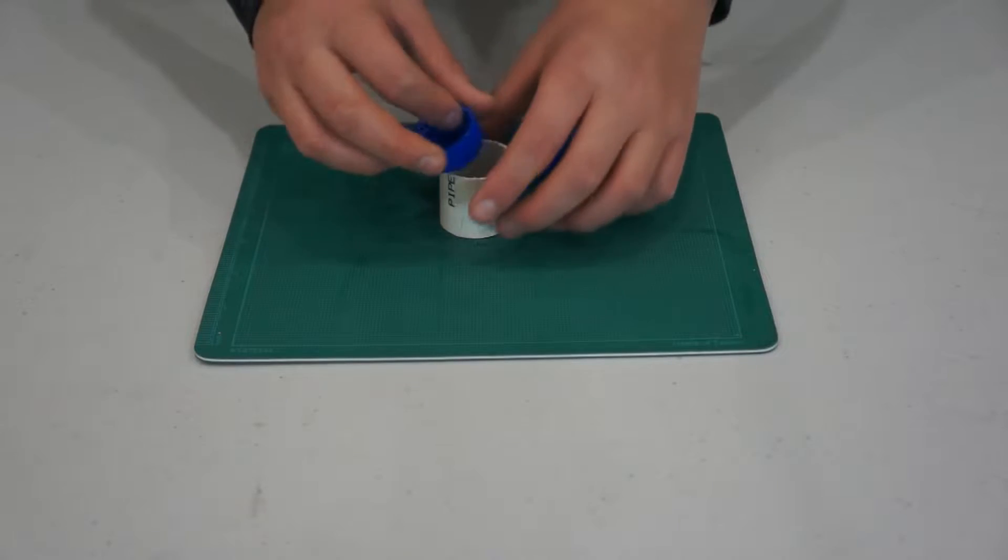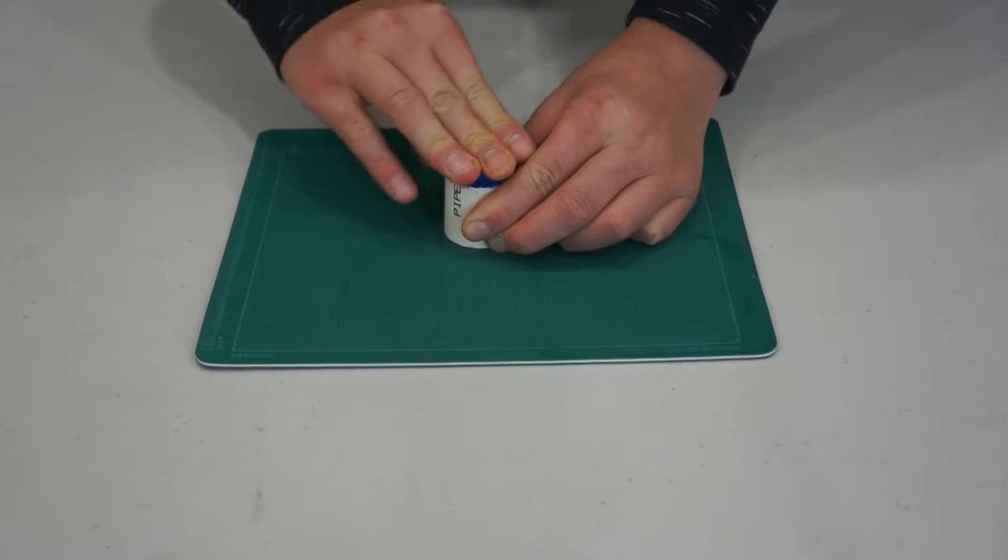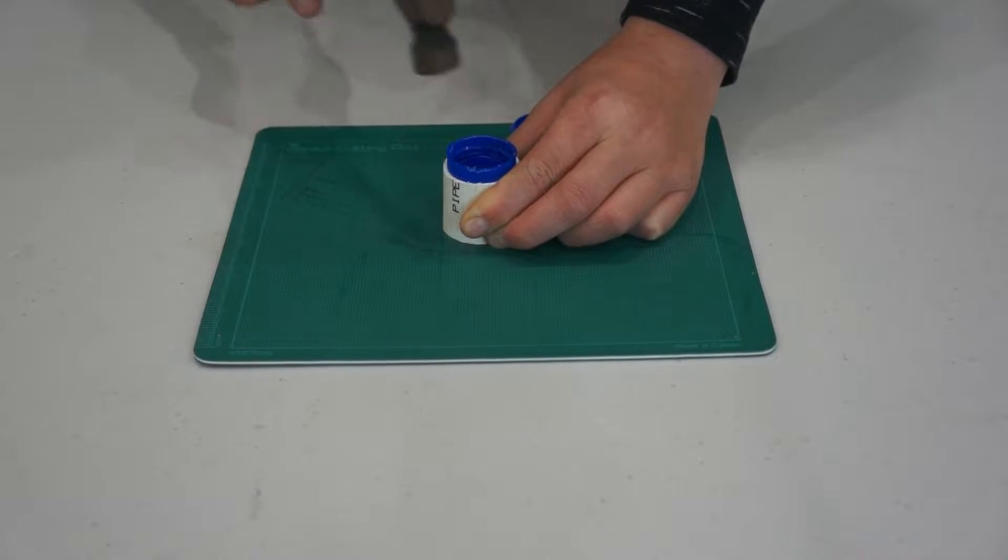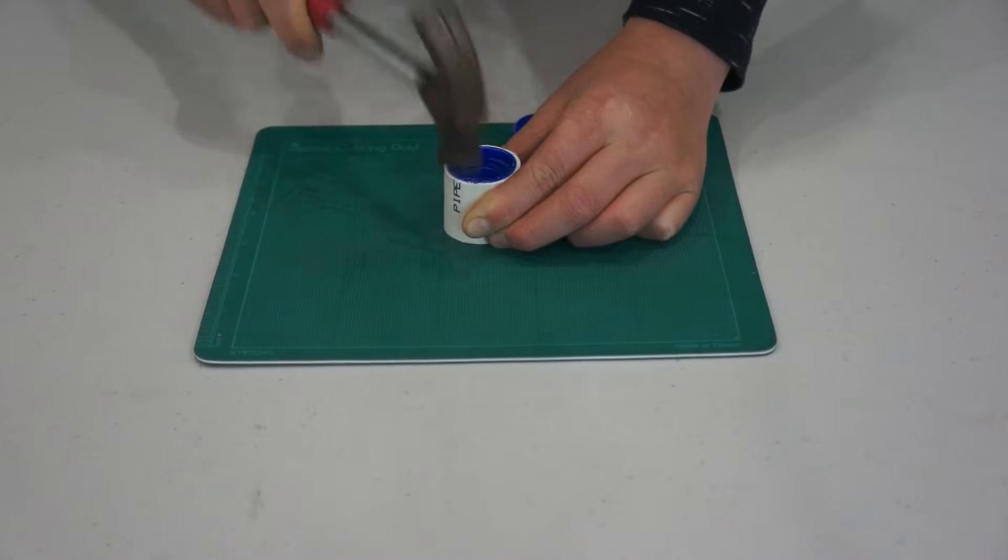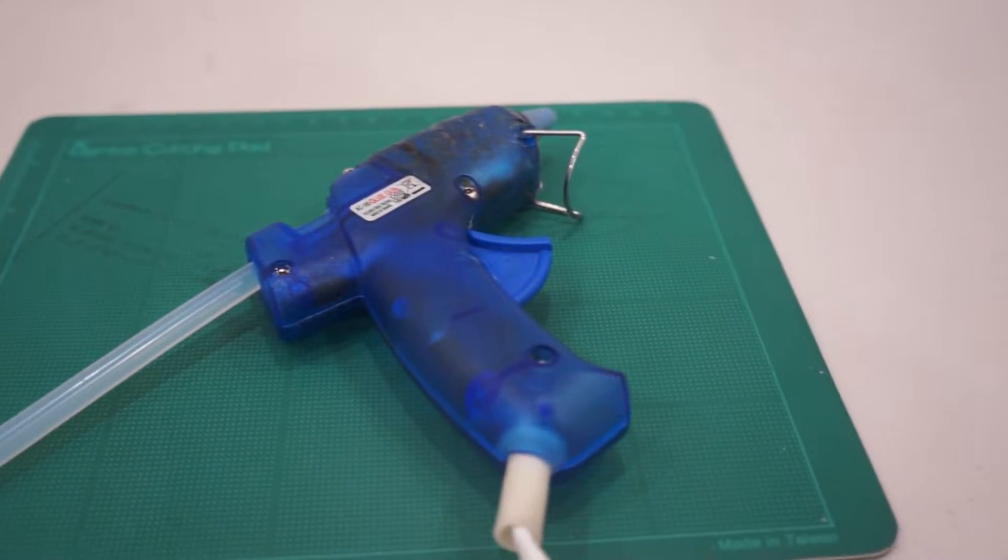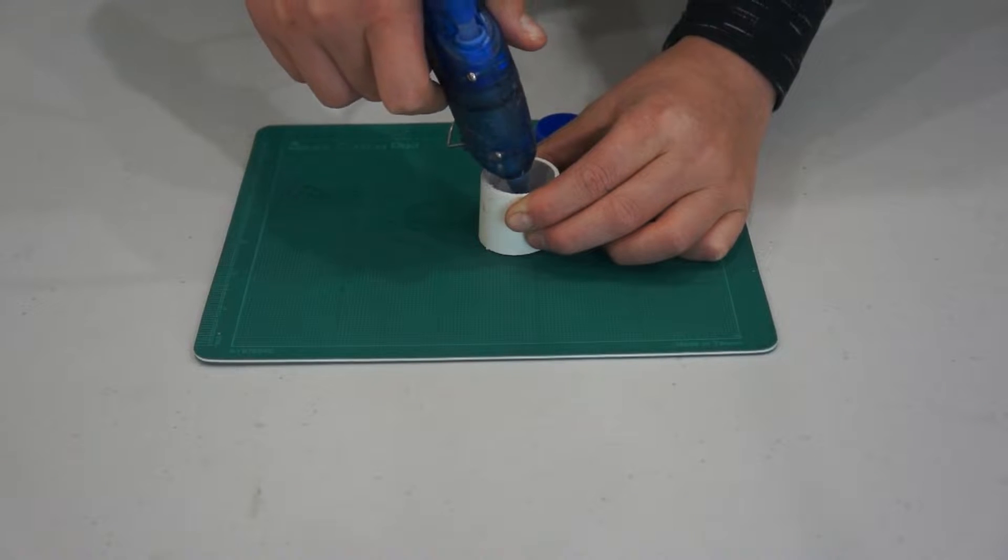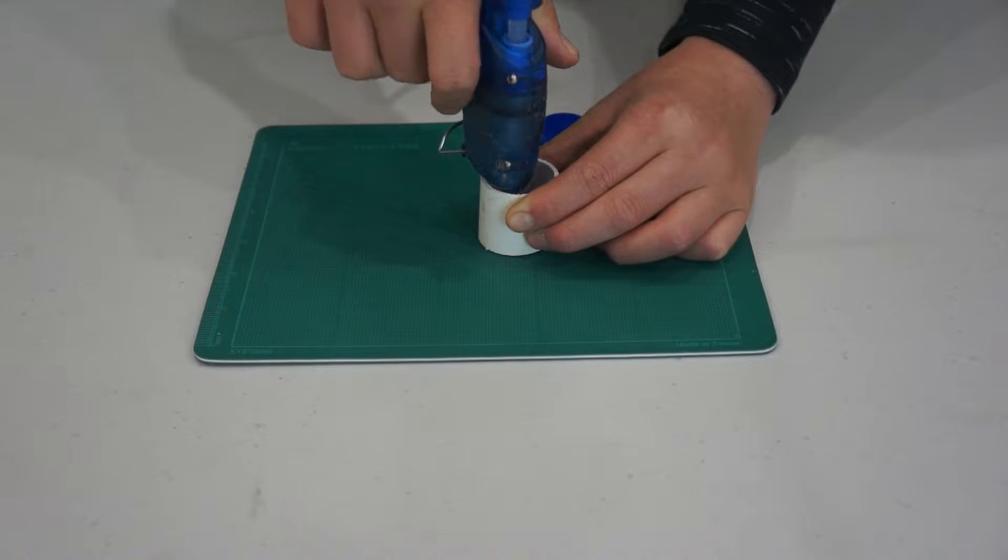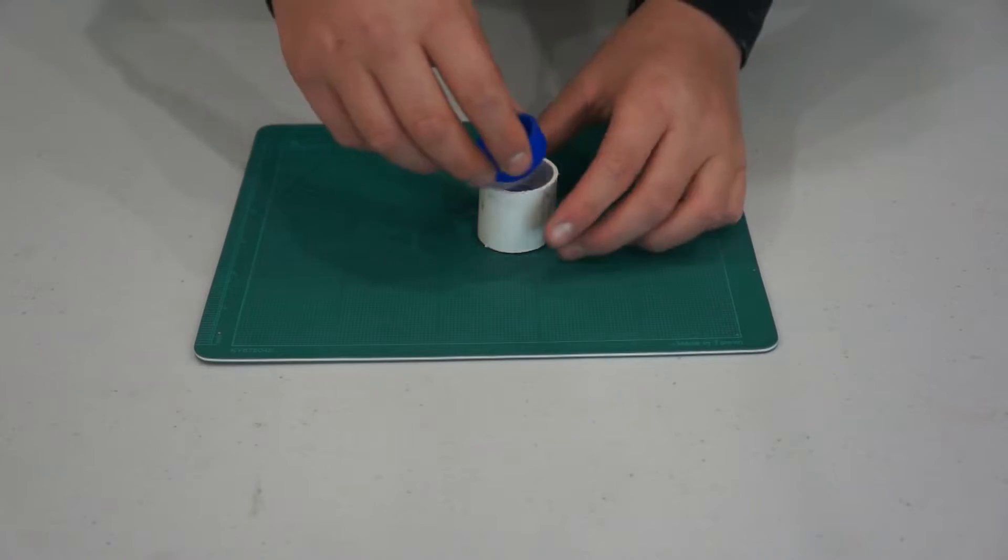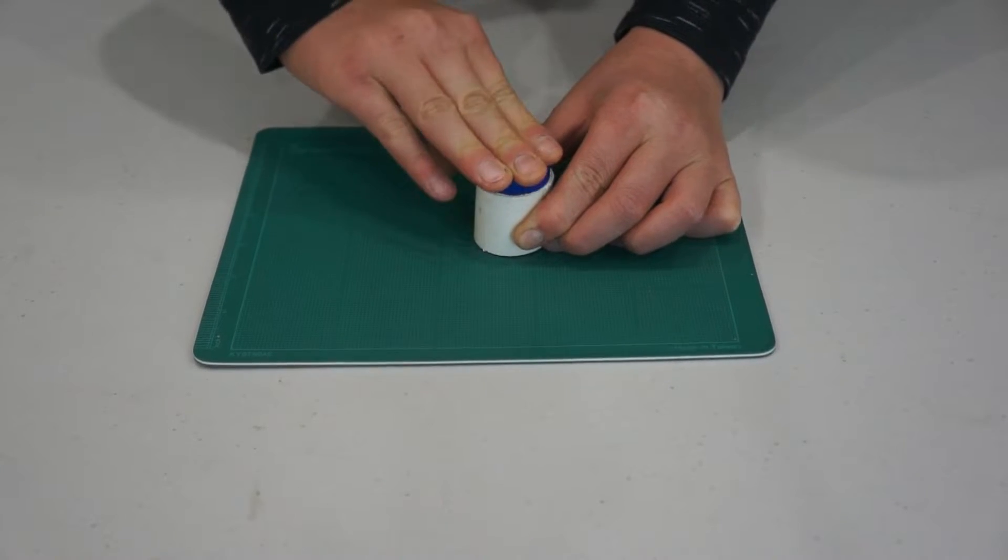Now push one bottle lid in the PVC pipe like this. You may need a hammer to help you. Get some hot glue and squirt a bit of it on the back of the bottle lid and push the other lid in as well.